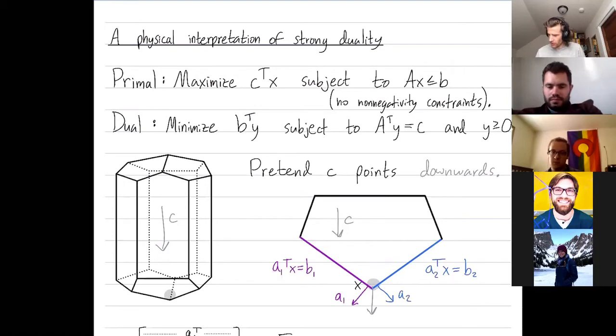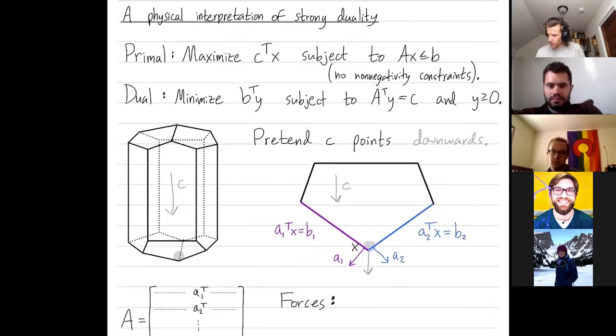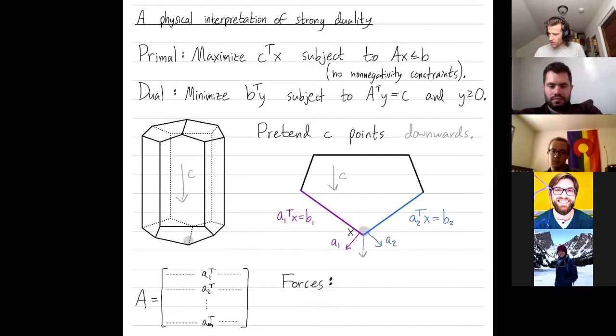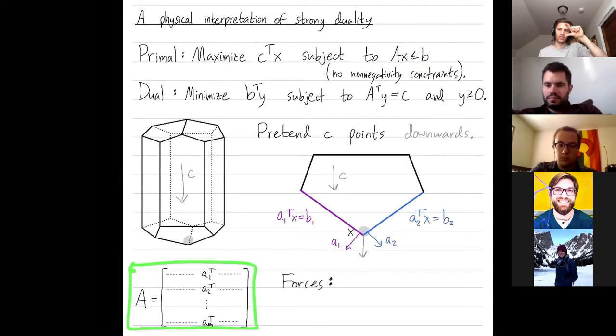The reason why I've drawn the arrows in the opposite direction is that these are actually... I need to introduce a little bit more notation. Here are my constraints. Ax is at most b. And I've drawn matrix A here for you. In our book, vectors are always column vectors. So now I'll talk about vector A1, vector A2, vector C. They're always column vectors.